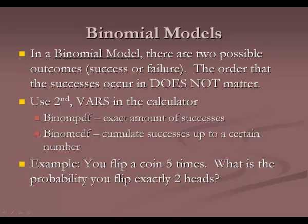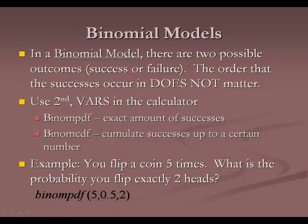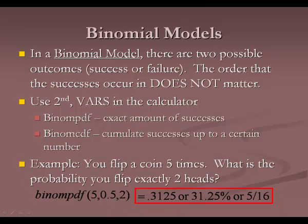Finding exactly two heads is much harder than just multiplying 0.5s because the heads can fall in any position. We use binomPDF, entering three numbers: the total (5 flips), the probability of success (0.5), and the number of successes we want (2). Enter binomPDF(5, 0.5, 2) and you get 0.3125, or 31.25% — also 5/16 as a fraction. You can verify this by listing all 32 possible outcomes for five coin flips and counting the ten that have exactly two heads: 10/32 reduces to 5/16.